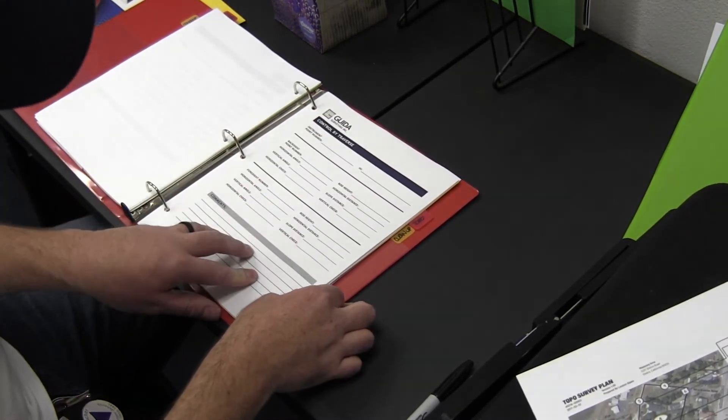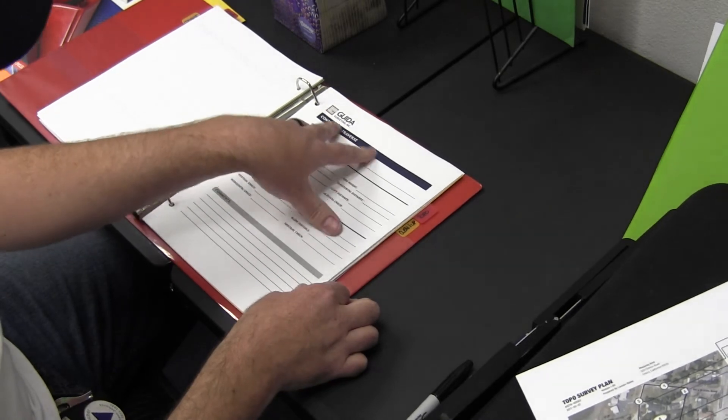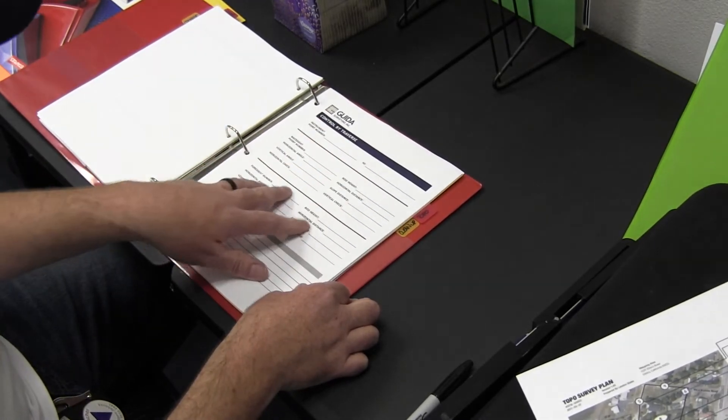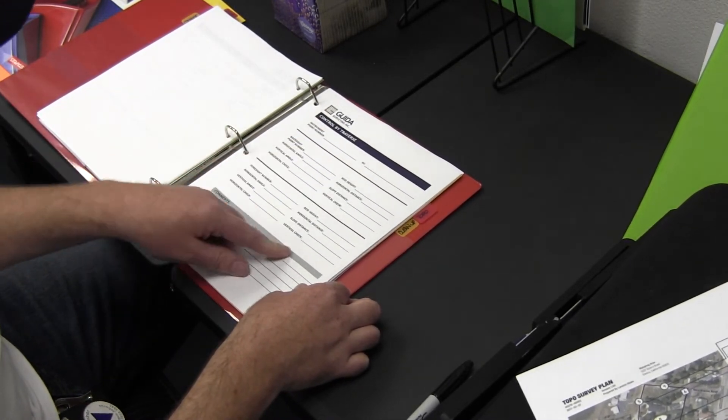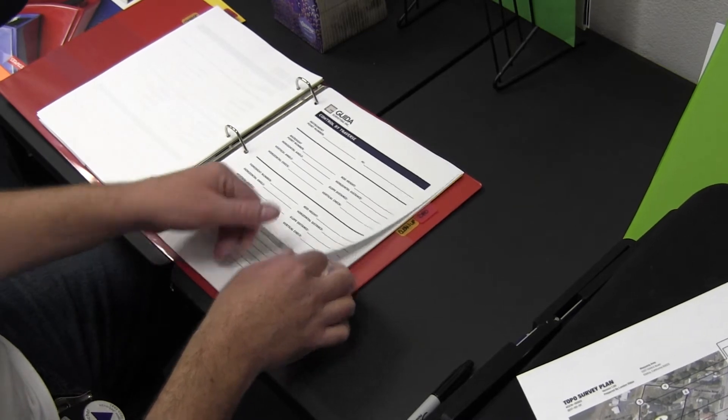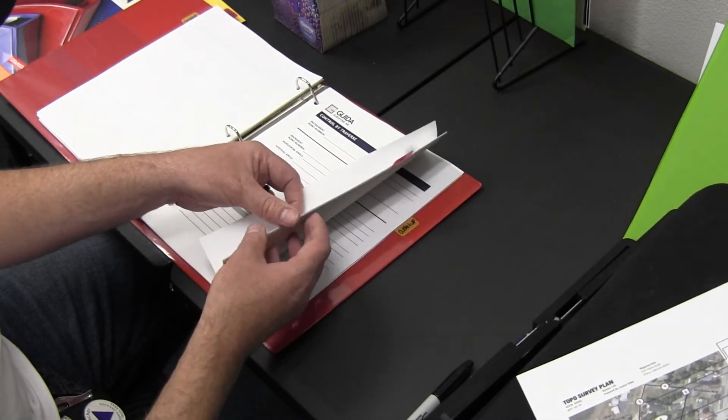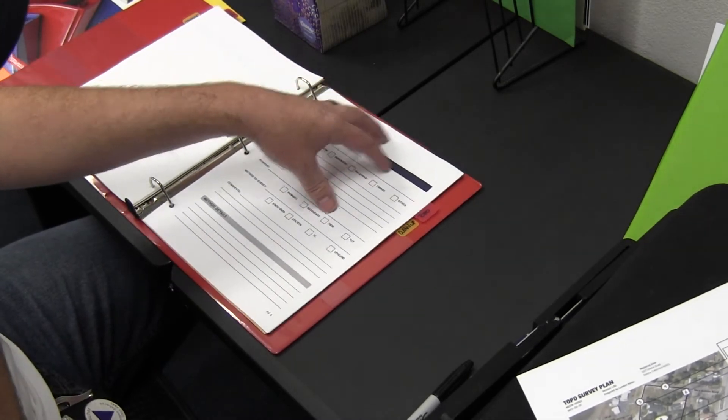This is just the information on the method used to set the control. For example, if you're doing a traverse: point number, HI, your angles, backsides, rod heights, instrument heights, angles.